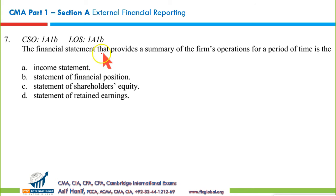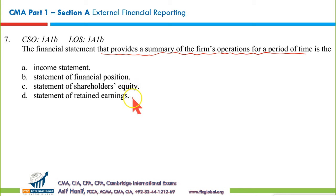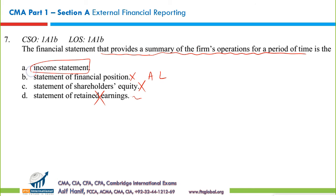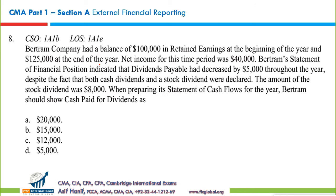Question 7: The financial statement that provides a summary of a firm's operations for a period. The statement of retained earnings shows changes in retained earnings — not operations. The statement of shareholders' equity and the balance sheet contain assets, liabilities, and equity components. Results of operations mean the income statement, making A the correct option.